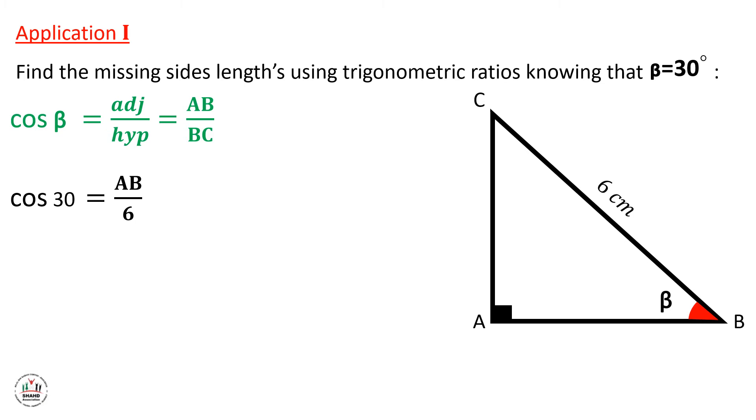So by using calculator, we can find cosine 30, which is equal to radical 3 over 2. And now we can do cross multiplication to find the side AB, or we can cancel 2 with 6 to give us 3 in the denominator, and then we multiply 3 by radical 3. And the answer will be equal to 3 radical 3 cm, and this is the length of side AB.